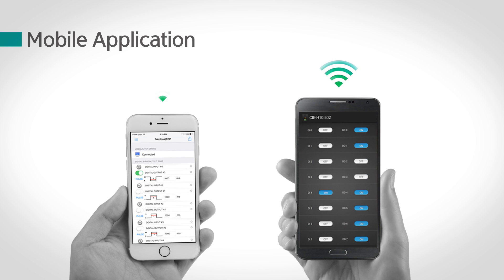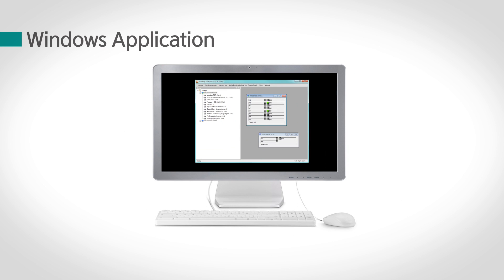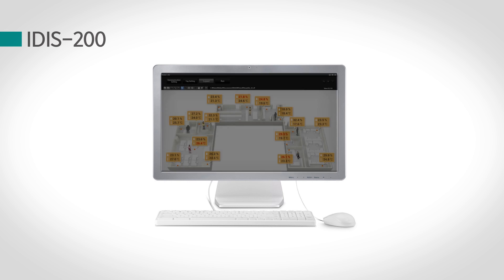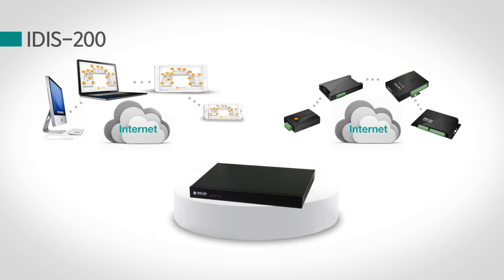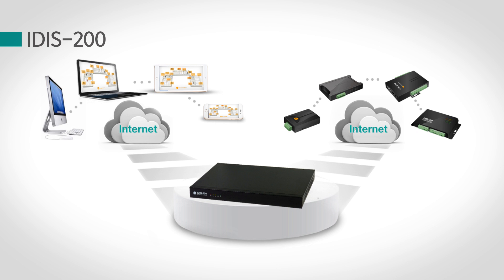You can also use a mobile application to control. Use MODMAT software provided by SOLID systems to monitor and control multiple devices on one screen at the same time. Use IDIS 200 to monitor and control the values of multiple IO products on a single screen by creating the screen in your desired shape.